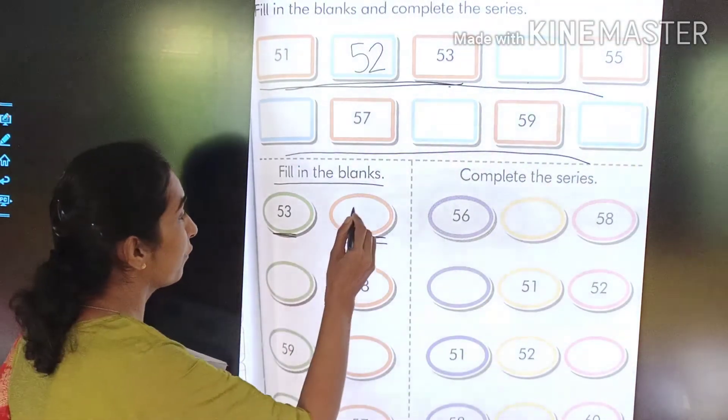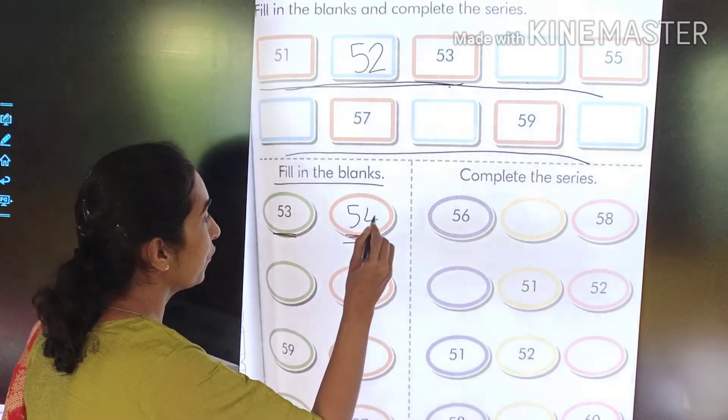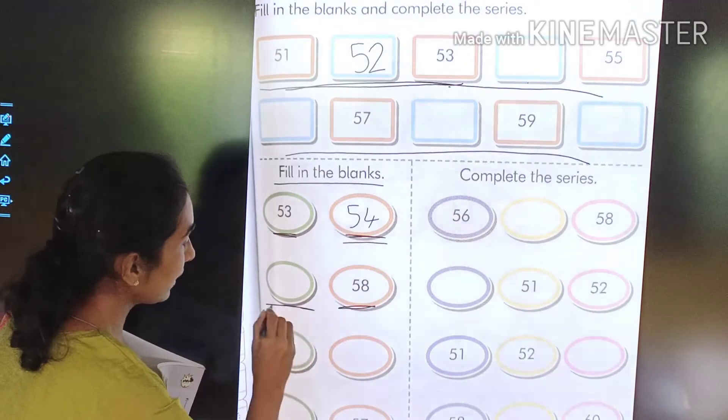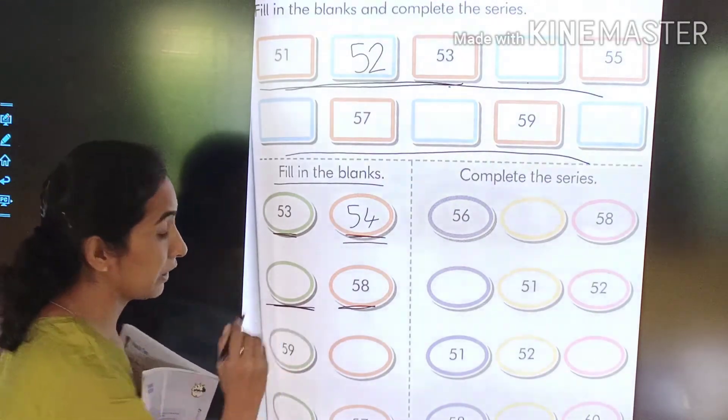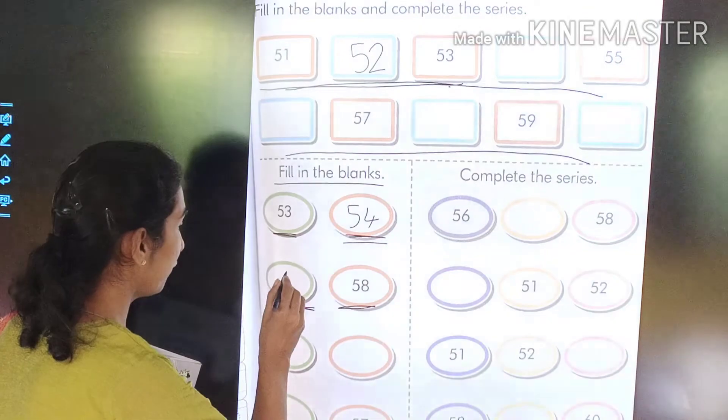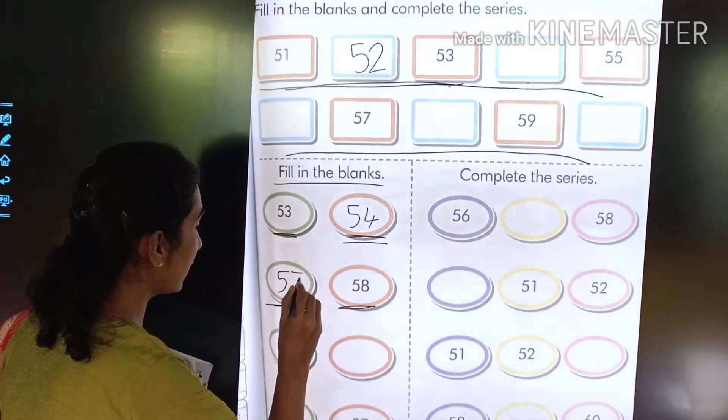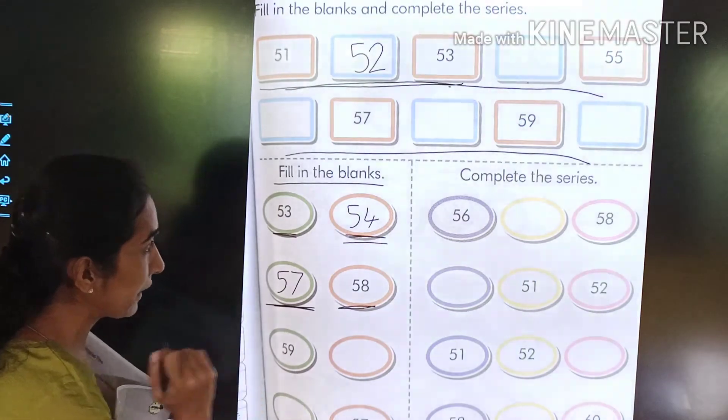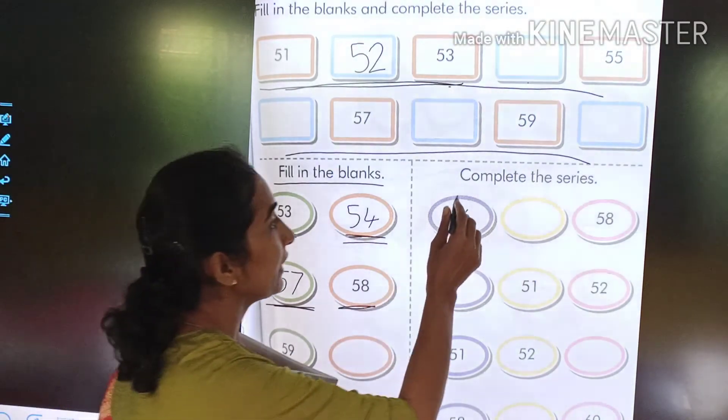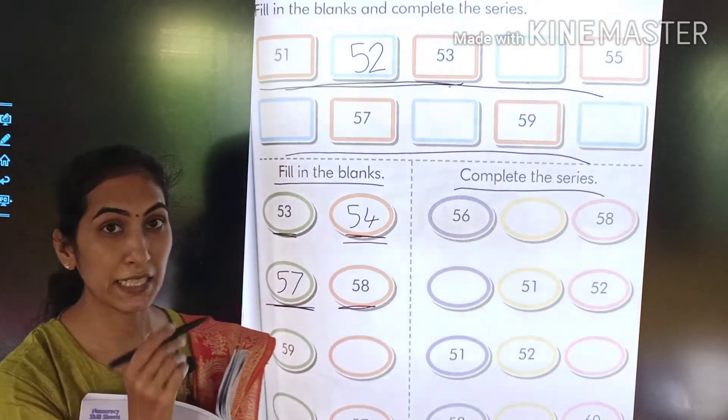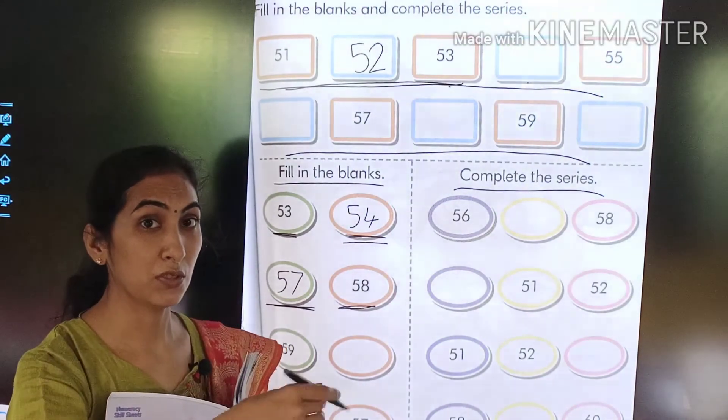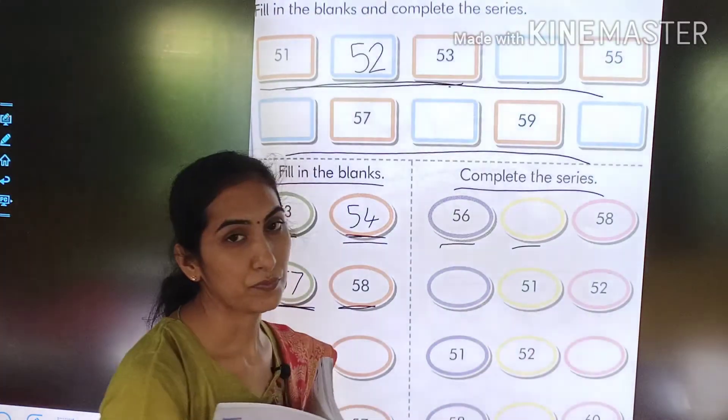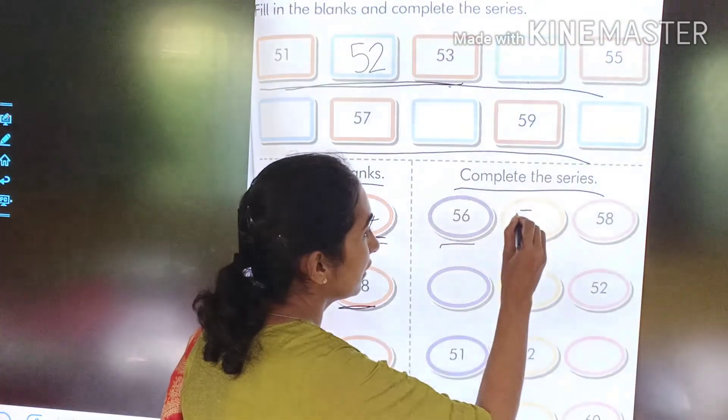After 53, 54. Now this is 58. The blank is before 58. So before what will come? 57. The same way you have to complete it till here. Complete the series. Series means what comes in sequence. One after two, two after three. What comes after 56?